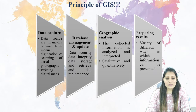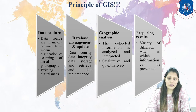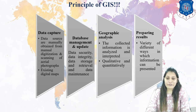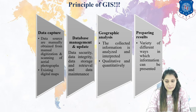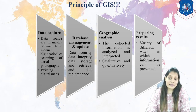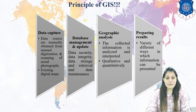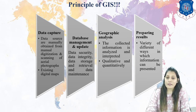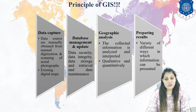Now, let's discuss in detail the principle of GIS, which is very important. First, it captures the data — that is data capture. Then database management system, geographic analysis, and finally we prepare the results. Data sources are manually obtained or manually digitized, and scanning of aerial photographs and satellite images can be used. Existing digital maps are also helpful. When you are preparing data for the GIS environment, you should always have latitudes and spatial references to your data. Otherwise, it is not helpful to do any analysis in GIS.